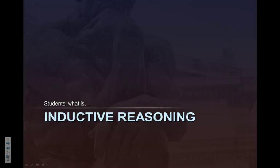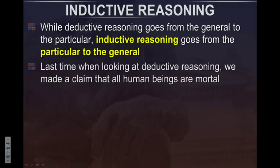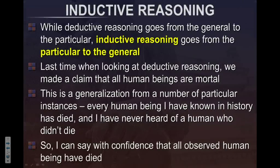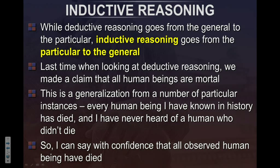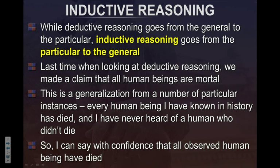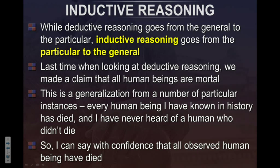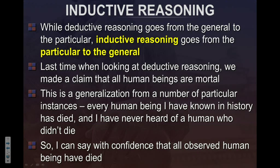With inductive reasoning, we're moving from the particular to the general. Last time we looked at deductive reasoning. In deductive reasoning, we made a claim — we said all human beings are mortal. This is a generalization, because you have observed that human beings will die. You've observed this.